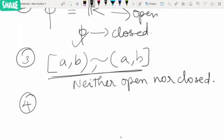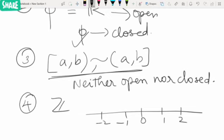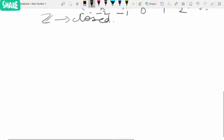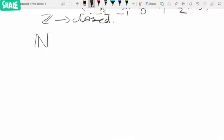complement will be the union of open intervals. Since the arbitrary union of open intervals is also open, Z complement is open, which implies Z is closed. In a similar way, we can talk about N also - it is also a closed set.